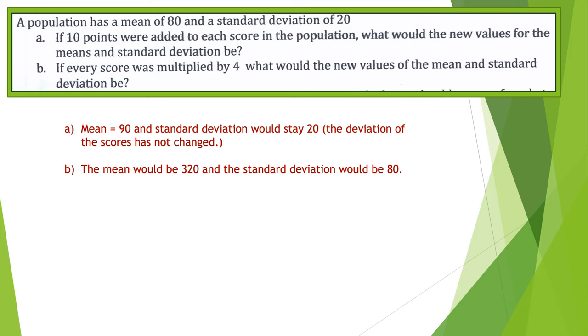And if I added those up, let's see, 320 and 240 is 560, 960. 960 divided by 3 would give me my new mean, but if you notice, it used to be 60, 80, 100. Now it's 240, 320, 400. So you can see that they've spread out more. So the standard deviation would also go up by that factor of 4, which would be 80.